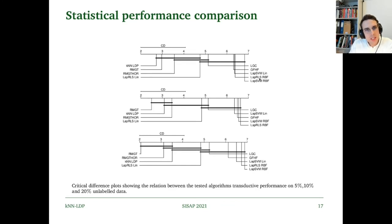When we increase the amount of labeled data to 10%, RMGT wins followed by KNN-LDP. Notice here that KNN-LDP is the only non-RMGT-based method that isn't significantly worse than RMGT in this test. Finally, for 20%, we see KNN-LDP fall a bit further behind but is still not significantly different from RMGT. Again, KNN-LDP is the only non-RMGT-based method that isn't significantly worse than RMGT.